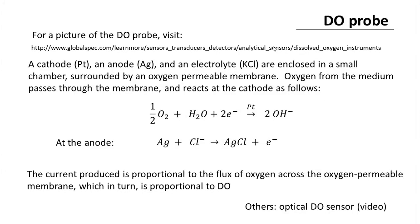Welcome to lecture number 17 of the NPTEL online certification course on bioreactors. In the previous lecture we solved practice problem 4.1. In the lecture before that we looked at certain bioreactor environment variables that affect bioreactor performance such as temperature, pH, medium composition, agitation and aeration levels, and dissolved oxygen levels. These are crucial and need to be properly measured and controlled.